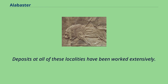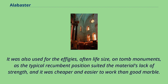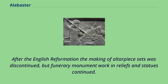In the 14th and 15th centuries, carving alabaster into small statues and sets of relief panels for altarpieces was a valuable local industry in Nottingham, as well as a major English export. These were usually painted, or partly painted. It was also used for the effigies, often life-size, on tomb monuments, as the typical recumbent position suited the material's lack of strength, and it was cheaper and easier to work than good marble. After the English Reformation, the making of altarpiece sets was discontinued, but funerary monument work in reliefs and statues continued.